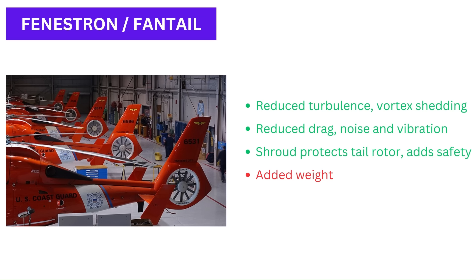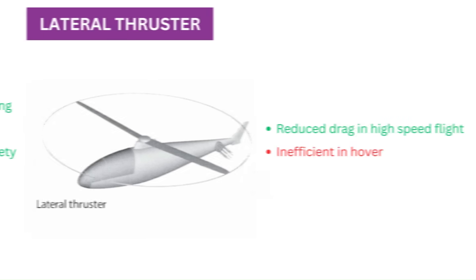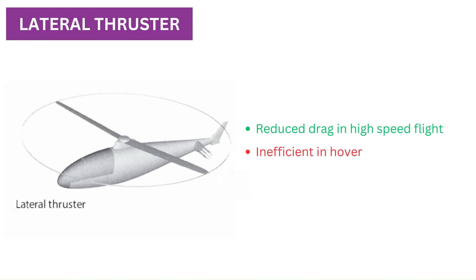However, the shroud adds weight that offsets at least some of the improvements in performance. A lateral thruster is an alternative to the tail rotor — it is a ducted fan inside the aft fuselage. While inefficient for hover, it can offer drag advantages in high-speed flight.